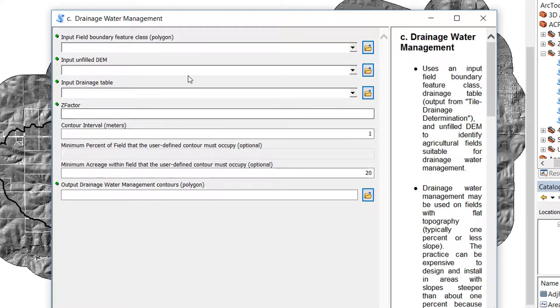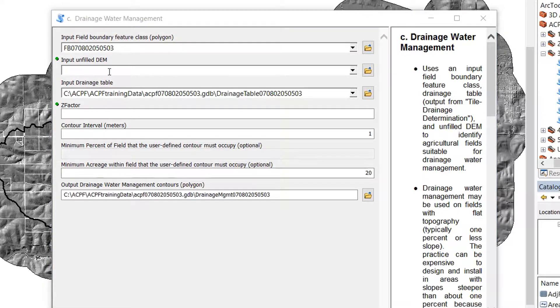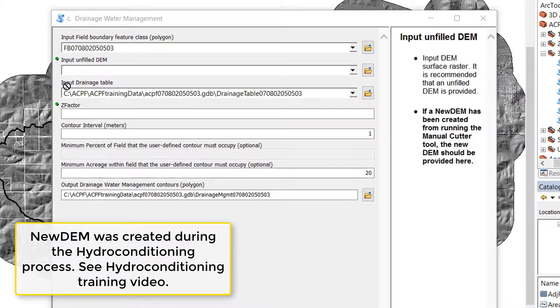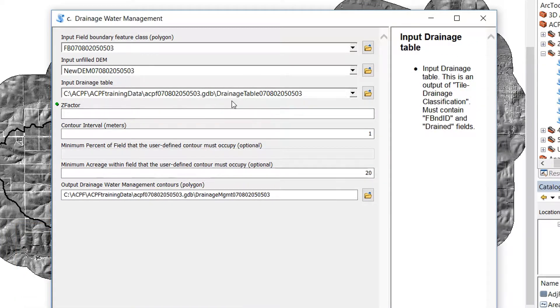And we have six inputs that it's asking for. We have our field boundary feature class. We'll drop that in there. We've got this unfilled DEM, which is the new DEM.